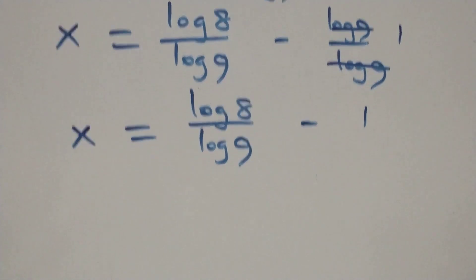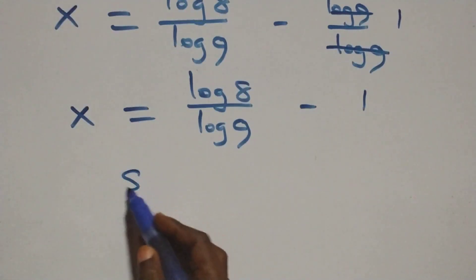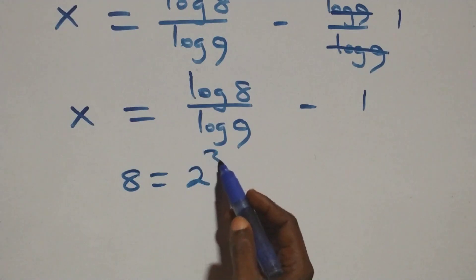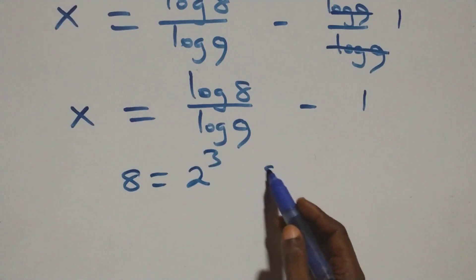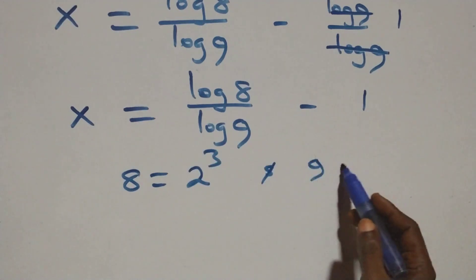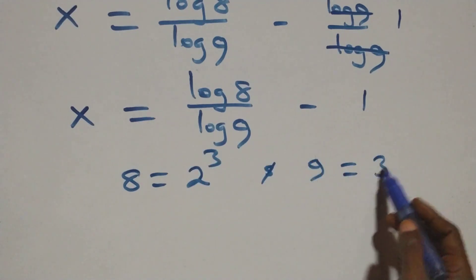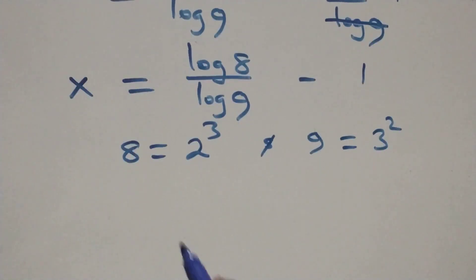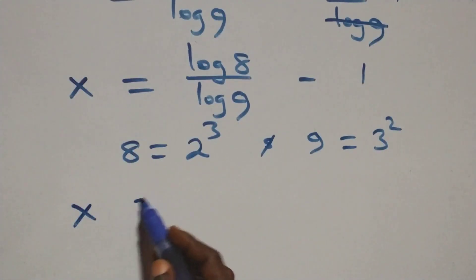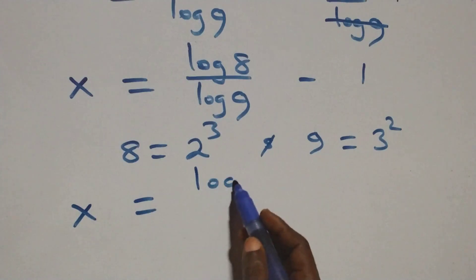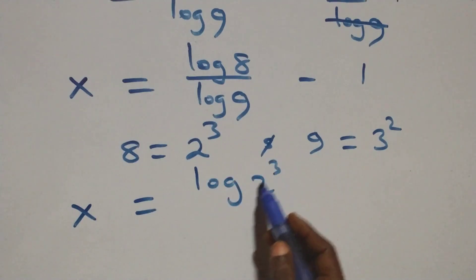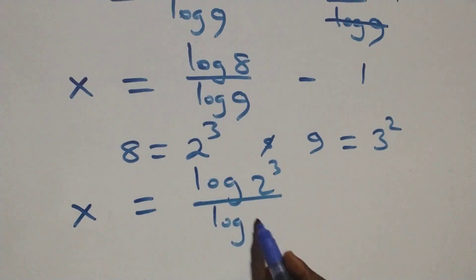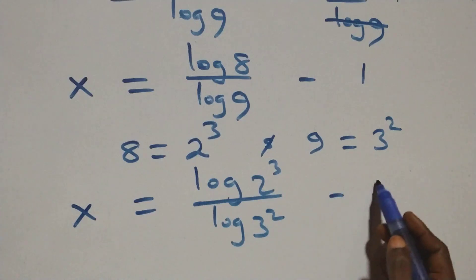From here, we can express 8 as 2 cubed and 9 as 3 squared. We count — x equals log(2 cubed) over log(3 squared) minus 1.